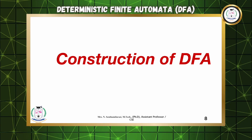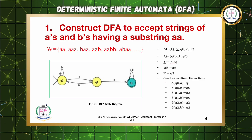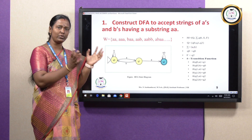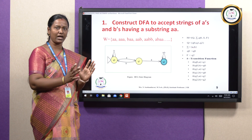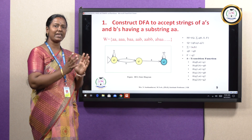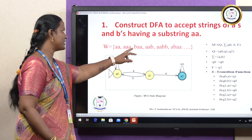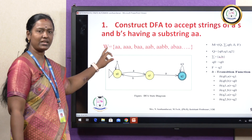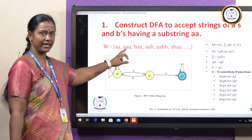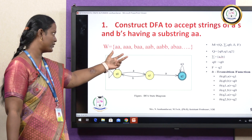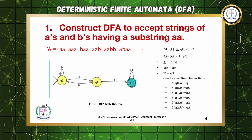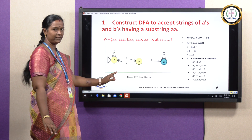Now we will see how to construct a DFA. The first problem: construct a DFA to accept strings of A's and B's having a substring AA. The input is A and B, but in each accepted word, AA must appear as a substring. AA can appear alone, or with more than two A's, or in combination with B's — like AA, AAA, BAA, AAB, and so on. Now I need to draw the DFA state diagram.